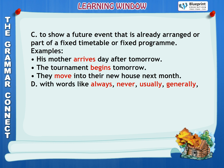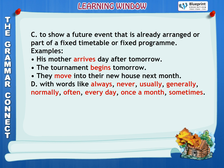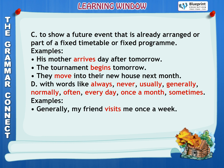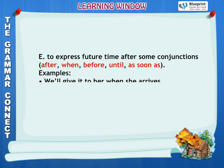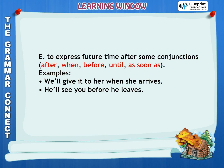D. With words like always, never, usually, generally, normally, often, every day, once a month, sometimes. Examples: Generally, my friend visits me once a week. We normally water the garden every day. E. To express future time after some conjunctions — When, Before, Until, As soon as. Examples: We'll give it to her when she arrives. He'll see you before he leaves.